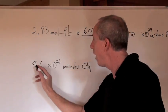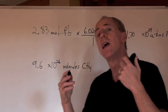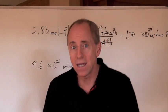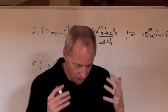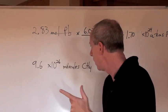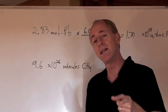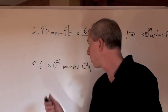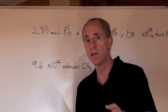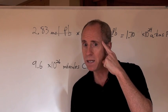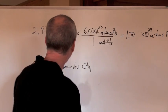Now look at this one. You have 1.96 times 10 to the 26 molecules of methane, and the question is: how many moles of methane do you have? That's bigger than Avogadro's number, so the answer will be more than one mole, because 10 to the 26 is bigger by at least a thousand times than 10 to the 23. So you know where your answer should end up — make sure you do the unit cancellation right.